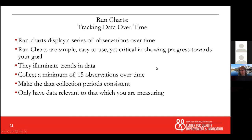A run chart is very different from a line chart. They both track things over time, which is what a run chart does — it tracks things over time. You can do a run chart by day or by month. You've probably seen run charts that track viral suppression over time. You just need a minimum of 15 observations over time, because that's called a run — hence the name.